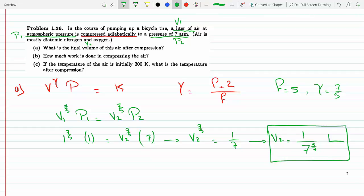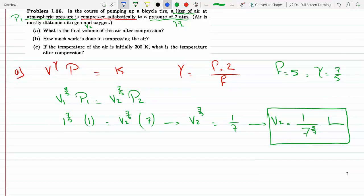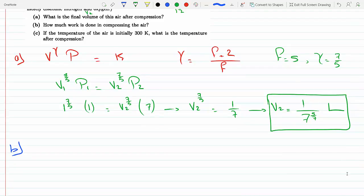Part B: How much work is done in compressing the air? We know that the work is minus integral P as a function of V dV, going from V1 to V2. This is minus integral, V1 was 1 liter, this is going to 7 to the minus 5 over 7, and then the pressure here would be... dV over V to the 7/5.